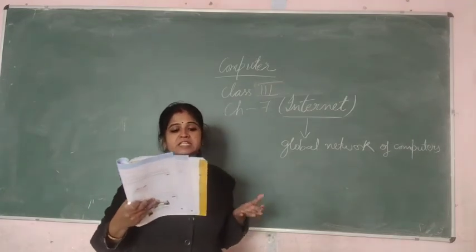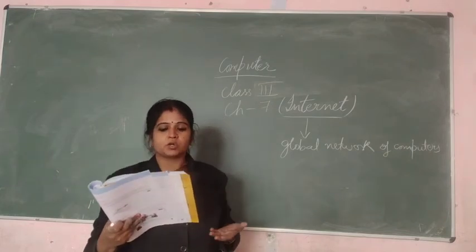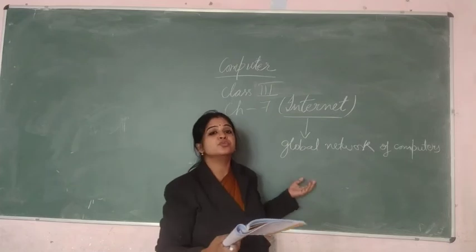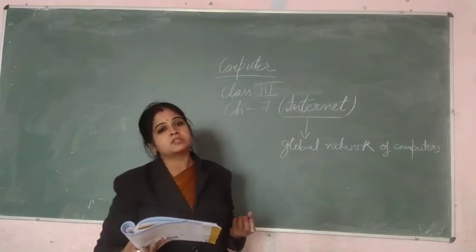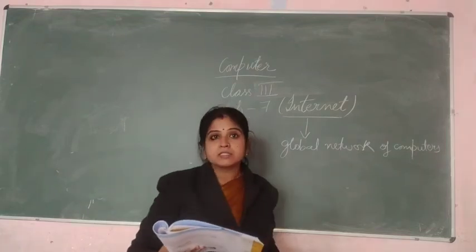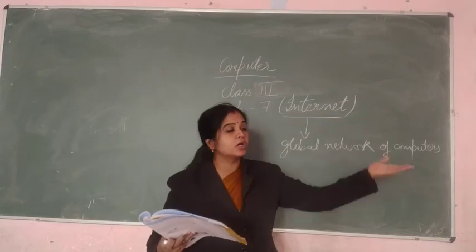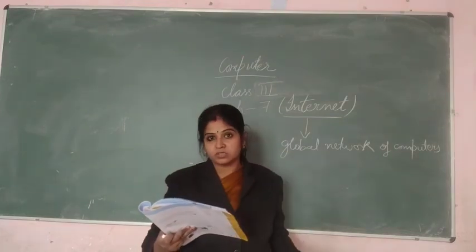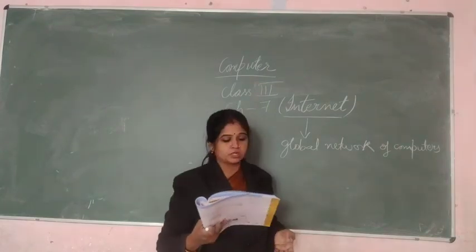The internet carries a vast range of information resources and services such as hypertext documents, World Wide Web, email, and file transfer. Internet is used to get information — any type of information you can search. You can send emails. You can even transfer money from one account to another account. Internet can be used across the world.